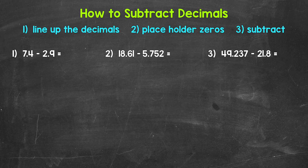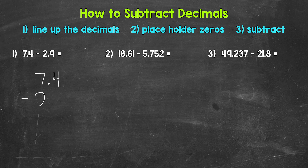Let's jump into number one, where we have 7 and 4 tenths minus 2 and 9 tenths. The first thing that we need to do when we have a subtraction problem involving decimals is to line up the decimals. So let's set up number one by lining up the decimals. We have 7 and 4 tenths minus 2 and 9 tenths.